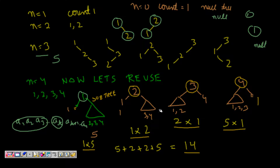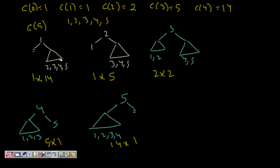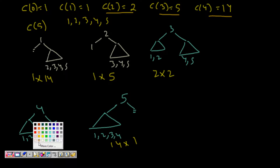So there are 14 possible binary search trees using 4 nodes. To make the concept clear: C0=1, C1=1, C2=2, C3=5, and C4=14. Let's quickly verify C5.